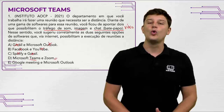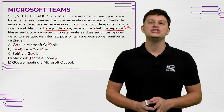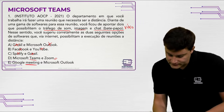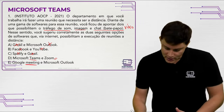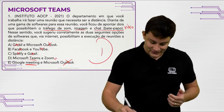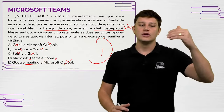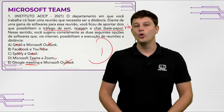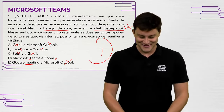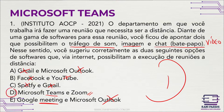Existe também o Google Meet, que também é uma ferramenta de reunião. O Outlook é sistema de e-mail. Então ficamos com a letra D. Se você não conhecia: Zoom, Microsoft Teams e Google Meeting são as principais ferramentas de videoconferência. Gabarito: letra D.